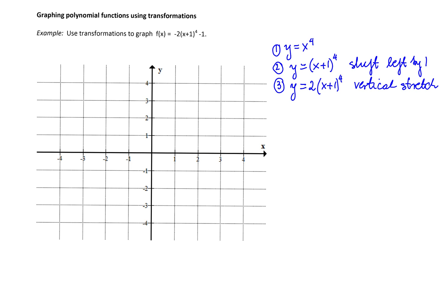The next transformation to the graph on the way to the formula for the function f of x would be to add minus sign in front of the whole formula. Adding minus sign to the function means we need to reflect the graph about the x-axis.